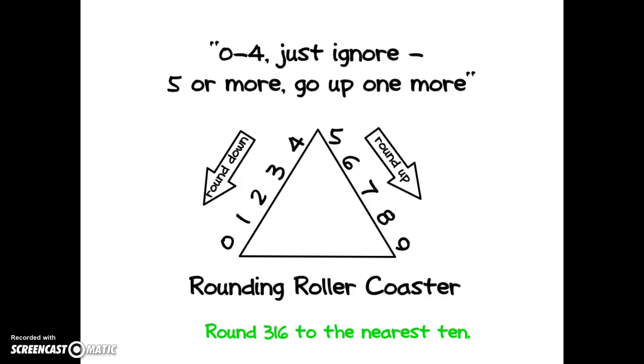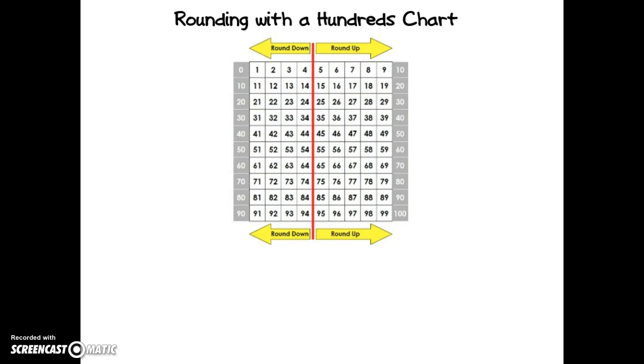Now let's go back to that rounding roller coaster and try to round three hundred sixteen to the nearest ten. Which digit do I look at to round? Here's my suggestion. Start rounding with a hundred chart.